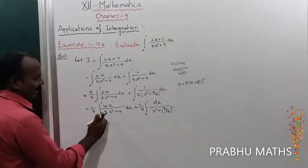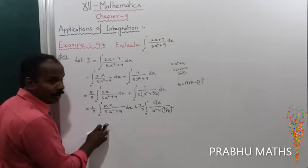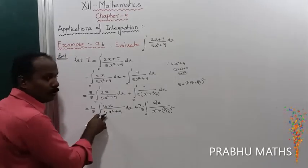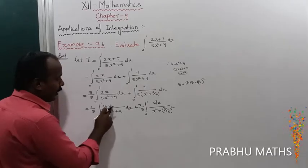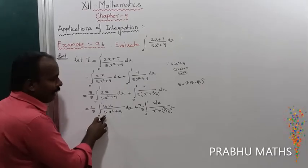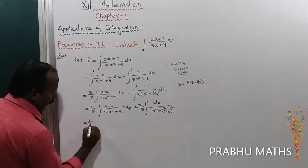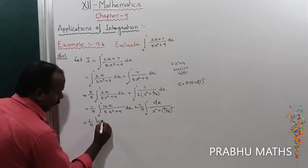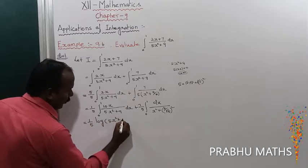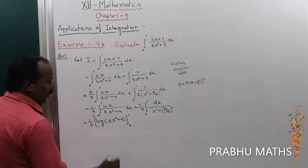The first step: denominator differentiated gives numerator, so we take the log of the denominator. That gives (1/5) · log(5x² + 9), with limits 0 to 1.